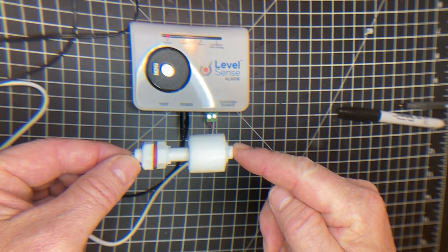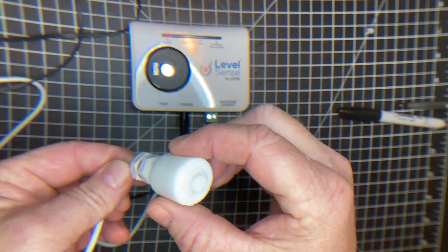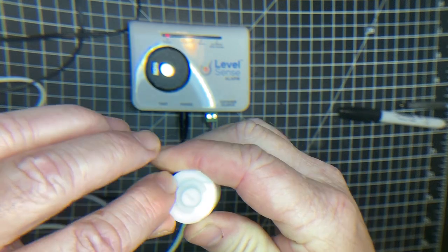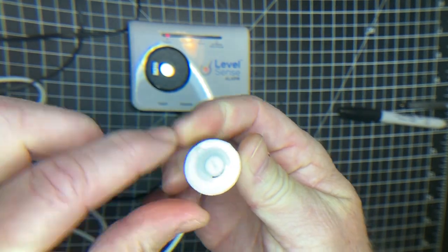You'll note this is the standard configuration the float switch comes. On the very bottom of the float switch, there's a small marker here. It's an arrow.